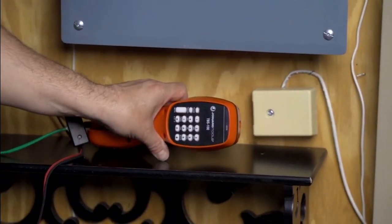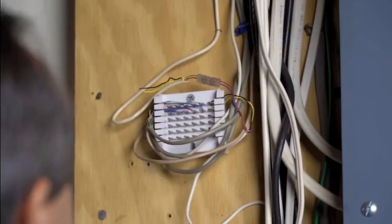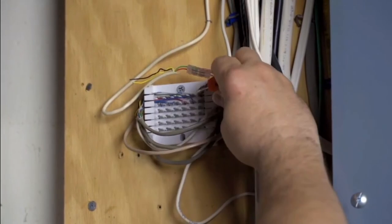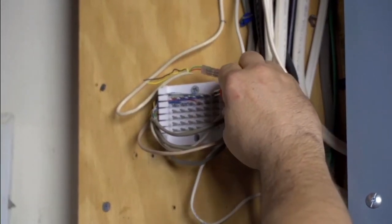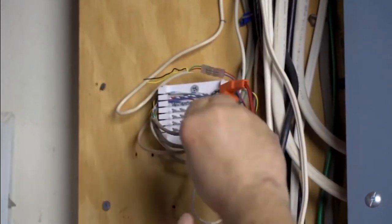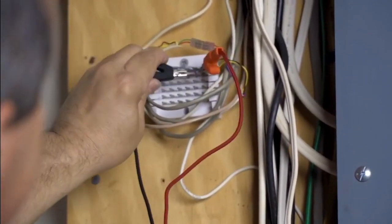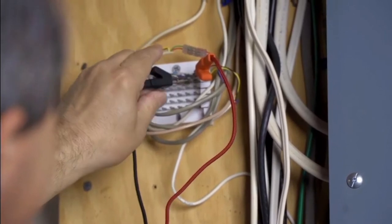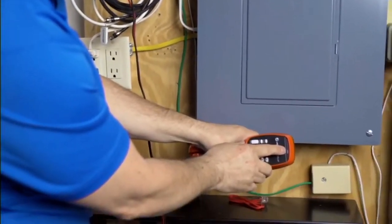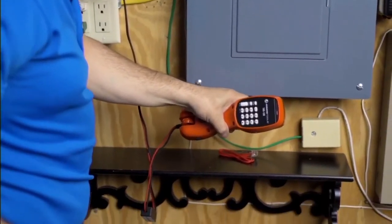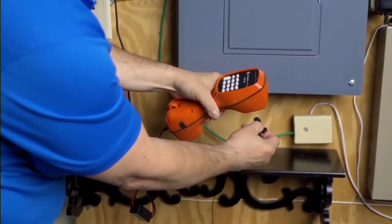Okay, next video. We're just using the alligator clips going on to a 66 block which is going out to different spots within the household here. Again, just showing you on hook, you can see we have dial tone there.